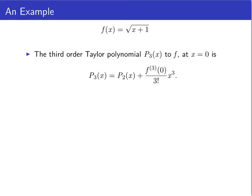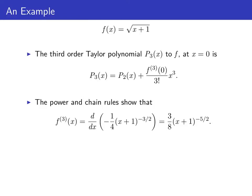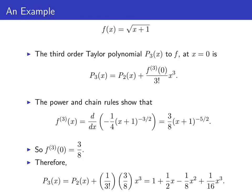Since p₃(x) is p₂(x) plus the third derivative of f at zero divided by three factorial times x cubed, and we already found p₂(x), we just need to find the third derivative of f at zero. The power rule and chain rule show that f'''(x) is three eighths times (x+1) to the negative five halves. So the third derivative of f at zero is three eighths. This makes p₃(x) equal to p₂(x) plus three eighths divided by three factorial times x cubed. So p₃(x) = 1 + (1/2)x − (1/8)x² + (1/16)x³.